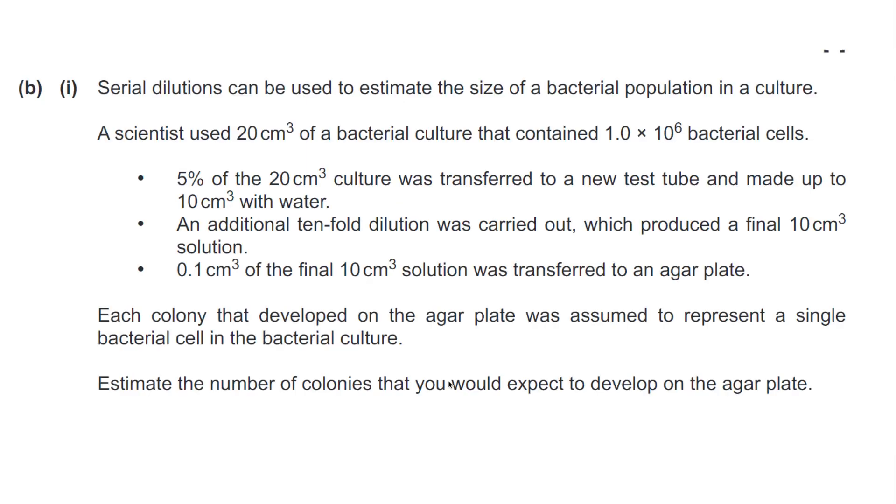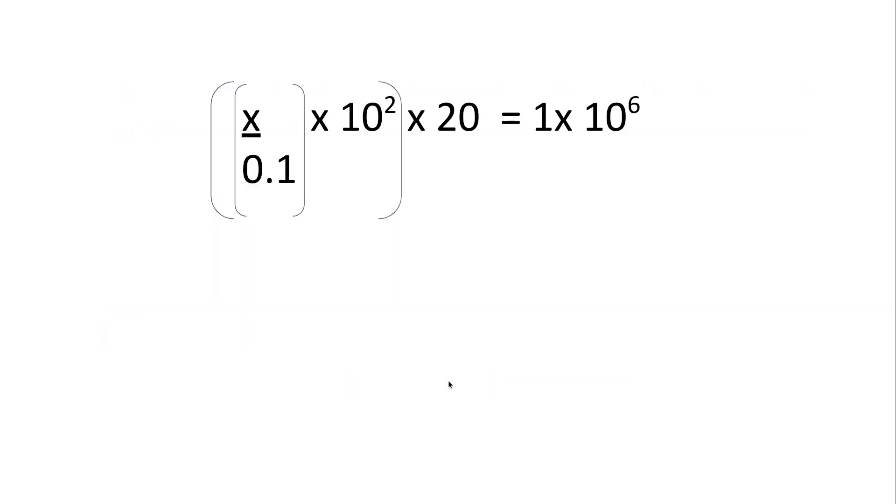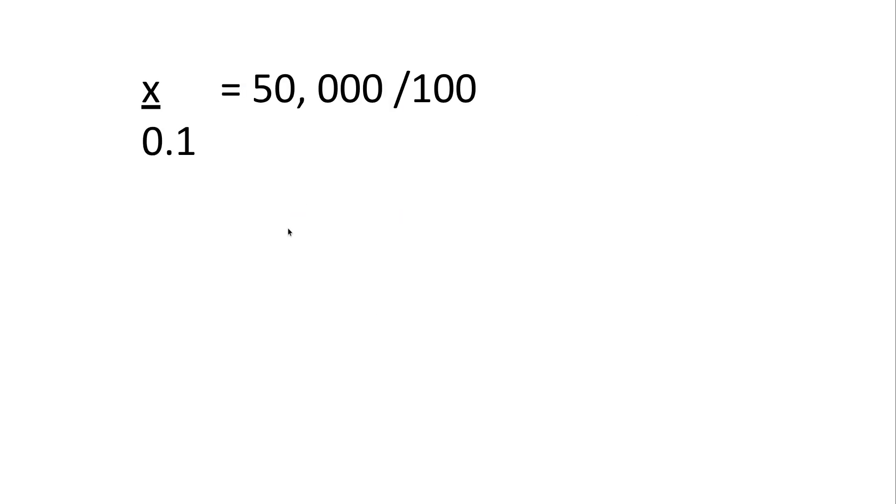This is probably one of the more difficult questions that I've seen on serial dilutions. Again, pause the video and have a go. But a tip here, if you're interested, is that you will need to rearrange the formula for this one. So pause that and have a go now. Okay, and this is what we should have done for this. So I'm trying to find out the number of colonies here, which is why I've got x here and all the other numbers I can substitute in. So if I rearrange the formula, like so, and then I can isolate the x in the next one, like so. I can then work out that the total number of colonies that I'm expecting is 50.